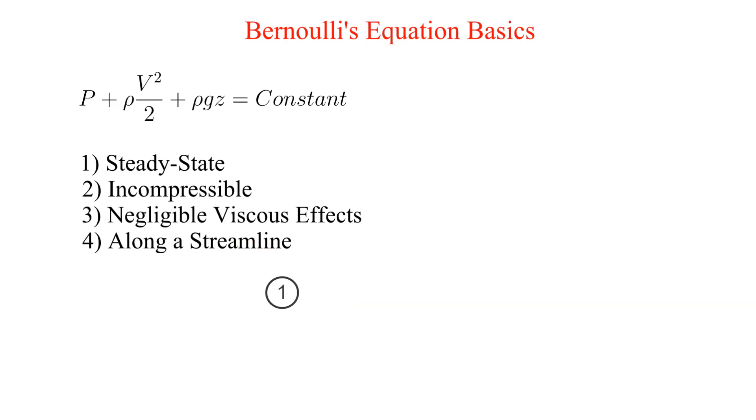In applying Bernoulli's equation we identify two points with the goal that for one point we will know all three of the terms and the second point contains the unknown for which we are seeking a solution. Using this method Bernoulli's equation equates the three terms from point 1 to point 2, care must be taken that the four restrictions listed above are satisfied or at least reasonable.